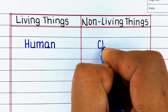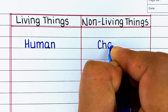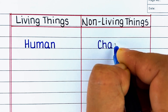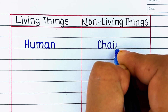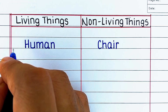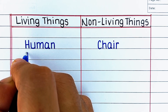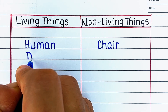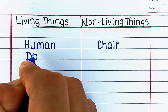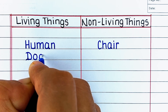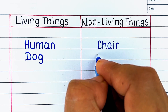First of all, let's understand which things are called living and which things are called non-living. Living things possess life characteristics like growth, reproduction, and the ability to respond to their environment, while non-living things are inanimate objects that do not exhibit these properties.